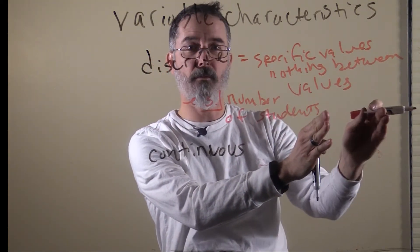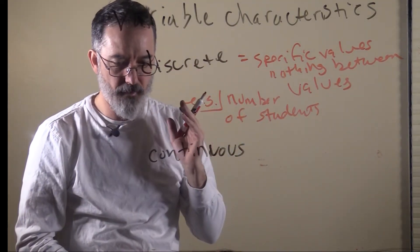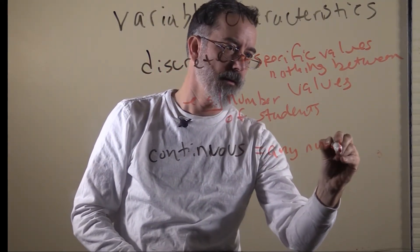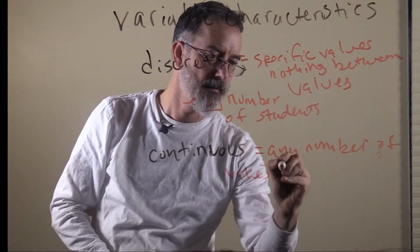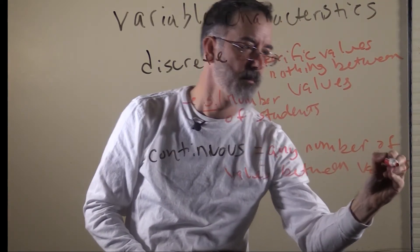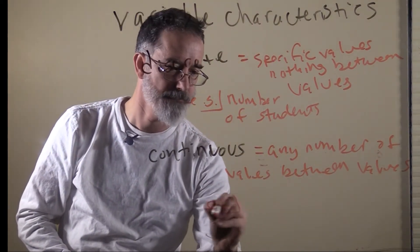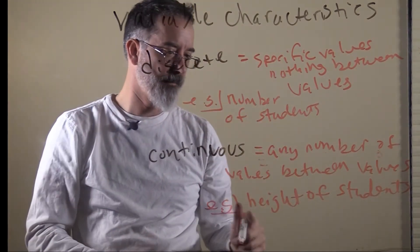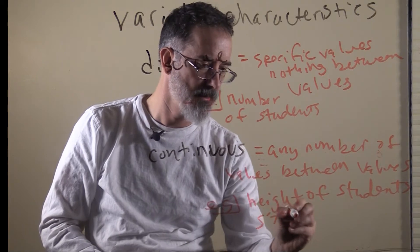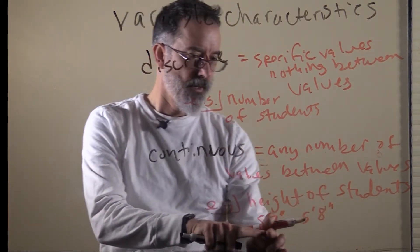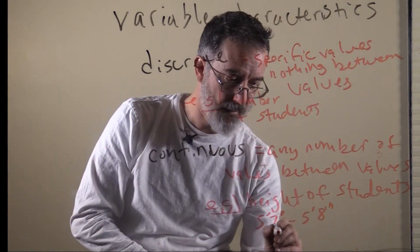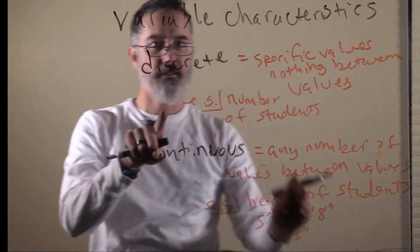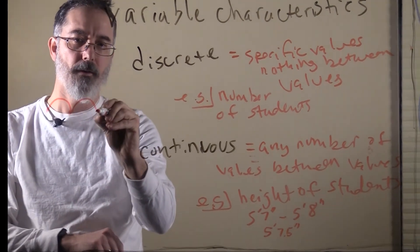Between the value of three and four, there is nothing in between — there is a jump. For continuous variables, on the other hand, there are any number of values between values. An example of this is height of students. In between two values such as five foot seven inches and five foot eight inches, somebody's height could actually be in between there, and you could measure it as five foot seven and a half inches.